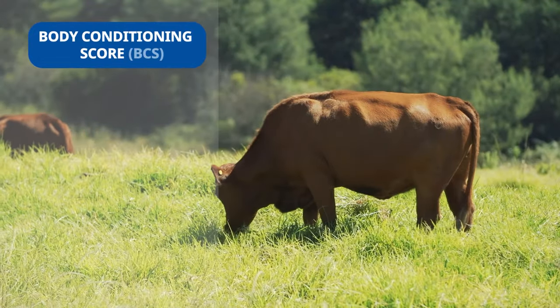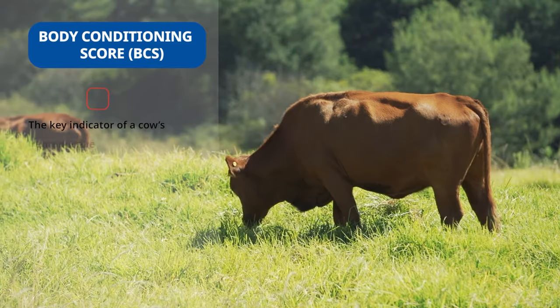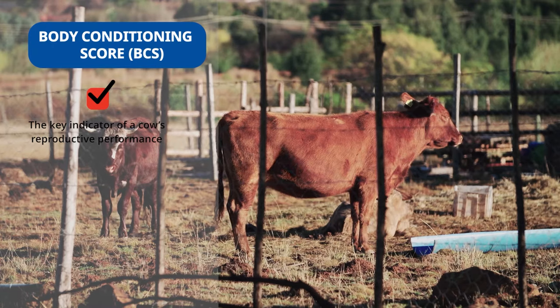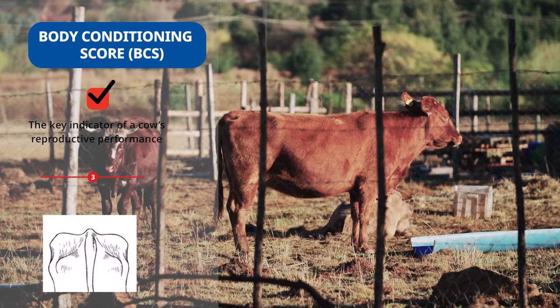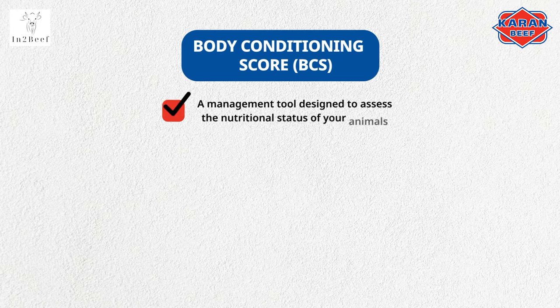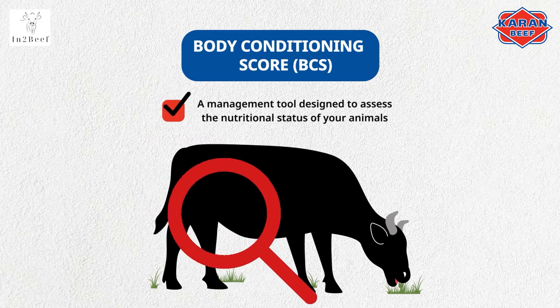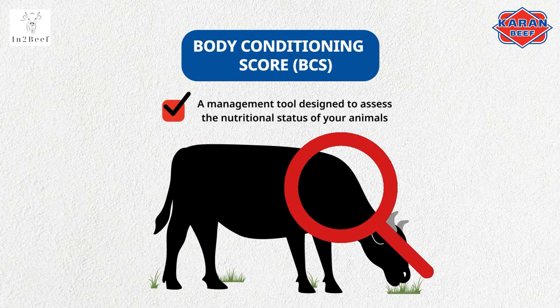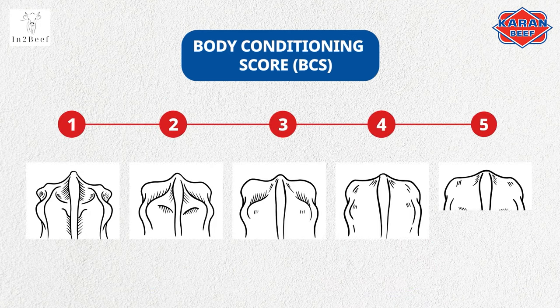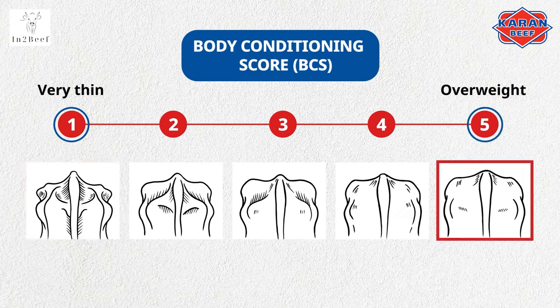Body condition score, or BCS, is the key indicator of a cow's reproductive performance. Ideally, first-calf heifers should not fall below a body condition score of 3 before calving. BCS is a management tool designed to assess the nutritional status of your animals and the fat and muscle covering on an animal's body. This scoring system runs on a 1 to 5 point scale, where 1 is very thin and 5 is overweight. The primary factors in prevention of infertility, abortions, and low calf production lie in good herd health care and management.